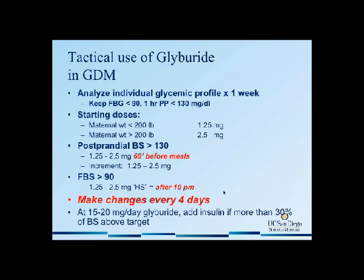With glyburide, it's important to make changes every four days to allow for a steady state of the medication. As reviewed earlier, if I reach a maximum dose of 10 milligrams per meal or a total dose of 15 to 20 milligrams per day, then I start adding insulin to control the blood glucose if needed.